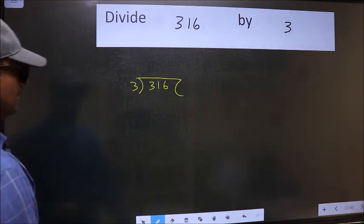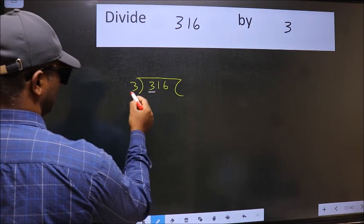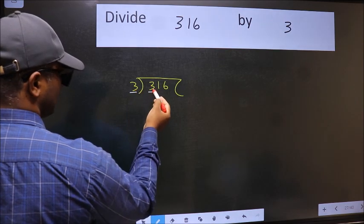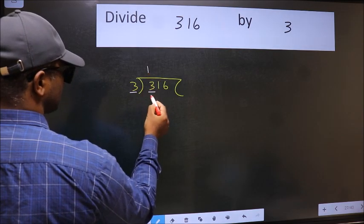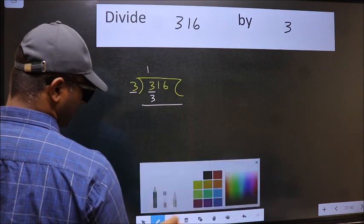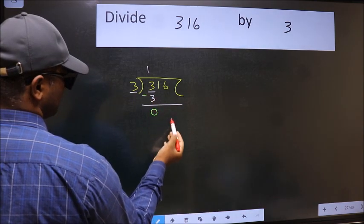Next, here we have 3. Here also 3. When do we get 3 in the 3 table? 3 once 3. Now we should subtract. We get 0.